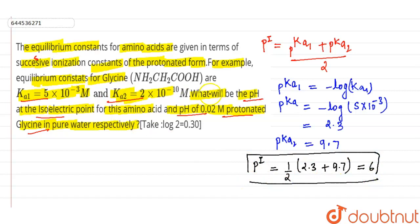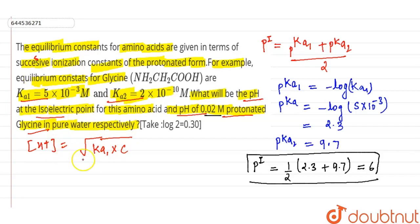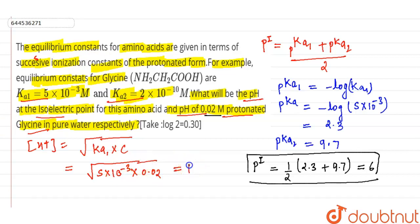Now we have to calculate the pH of 0.02 molar protonated glycine. The formula for this is: [H⁺] = √(Ka1 × C), where C is the concentration. Ka1 is 5×10⁻³, so [H⁺] = √(5×10⁻³ × 0.02) = √(10⁻⁴) = 10⁻².